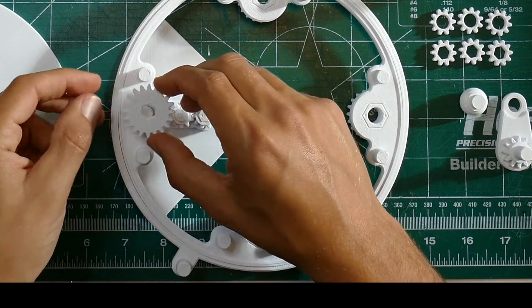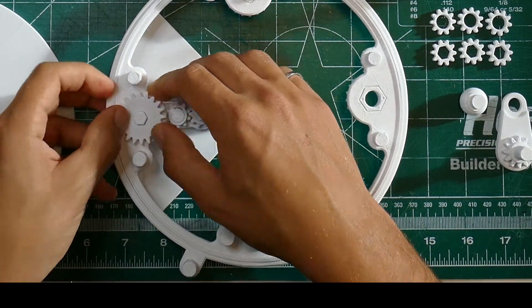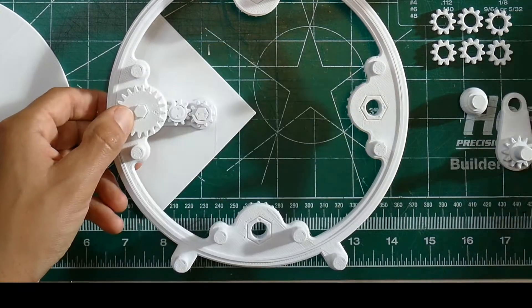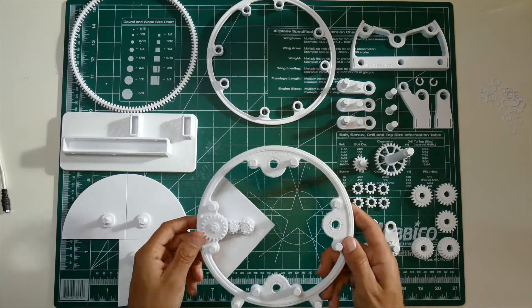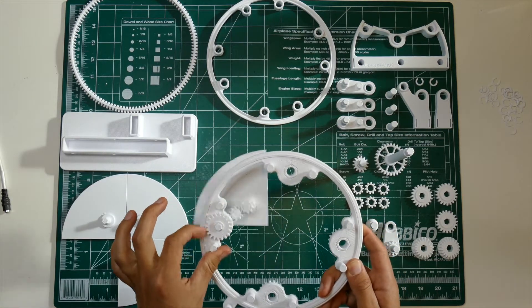Now grab one of the other 20 tooth gears with the hex in the middle and make sure that the dots align to the dots on the first hex that we put in. So you clamp it into place and then move it around just to make sure that everything is moving well.